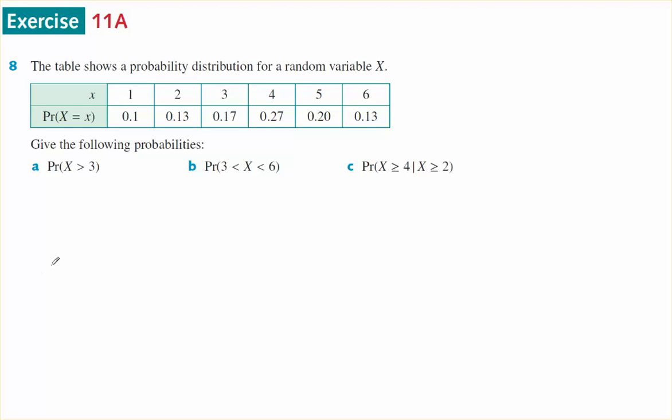The probability that it is bigger than 3 is the same as the probability that X is bigger than or equal to 4. So it's going to be 4, 5, and 6.